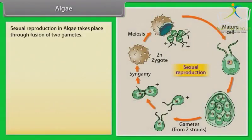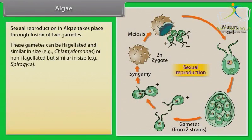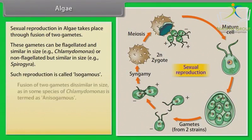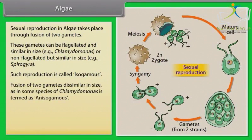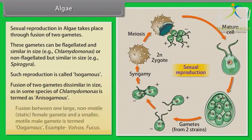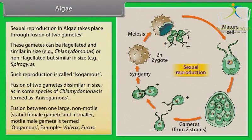Sexual reproduction in algae takes place through fusion of two gametes. These gametes can be flagellated and similar in size, as in Chlamydomonas, or non-flagellated but similar in size, as in Spirogyra — such reproduction is called isogamous. Fusion of two gametes dissimilar in size, as in some species of Chlamydomonas, is termed anisogamous. Fusion between one large, non-motile, static female gamete and a smaller, motile male gamete is termed oogamous — examples include Volvox and Fucus.